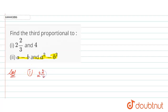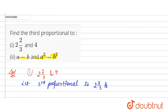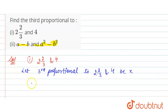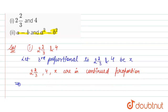For the first part, we have 2, 2 by 3, and 4, and we have to find the third proportional. Let the third proportional to 2, 2 by 3, and 4 be x. So it means 2, 2 by 3, 4, and x are in continued proportional. This implies 2 to 2 by 3 ratio 4 is equal to 4 ratio x.